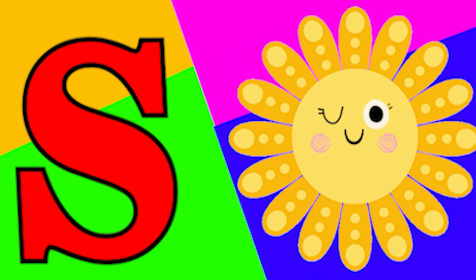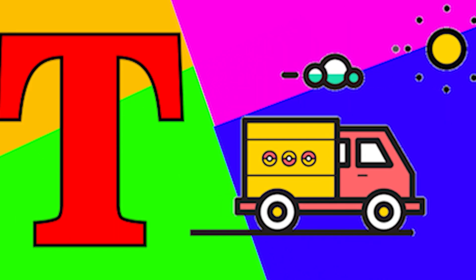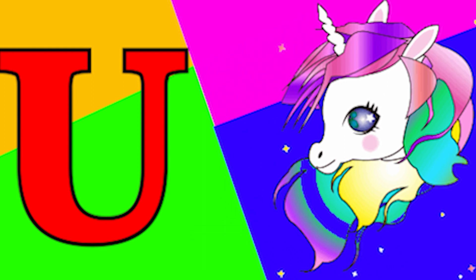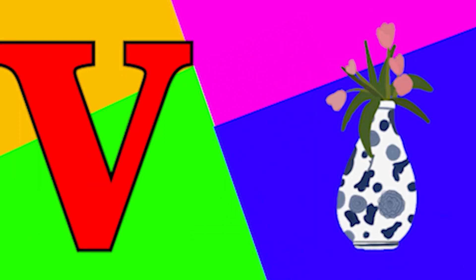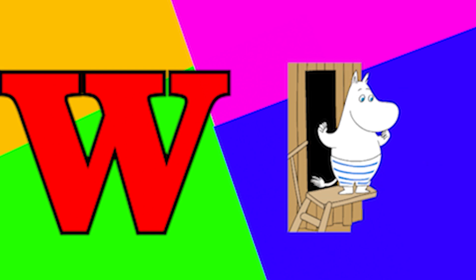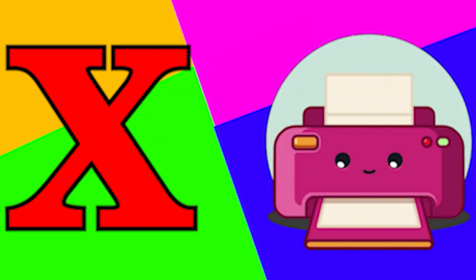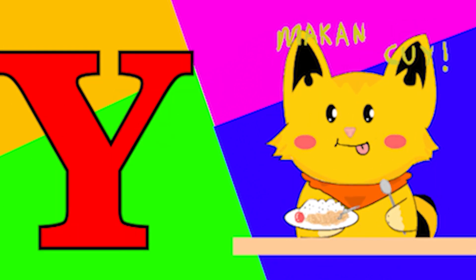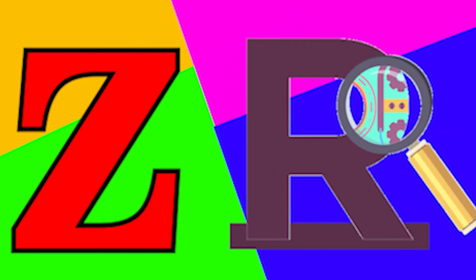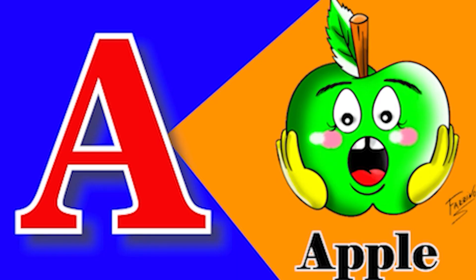R for Rose, S for Sand, T for Trap, U for Unicorn, V for Vase, W for Whale, X for Zero, Y for Yellow, Z for Zoo, A for Apple.